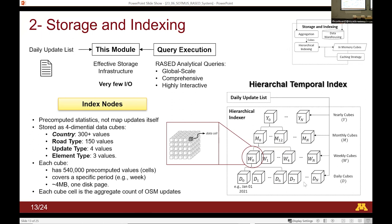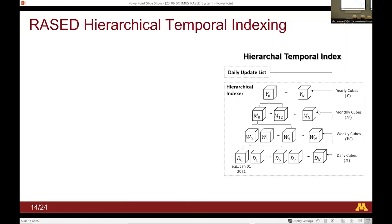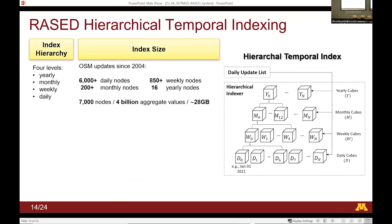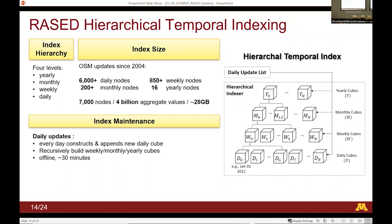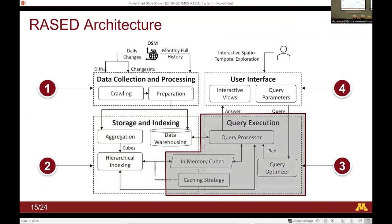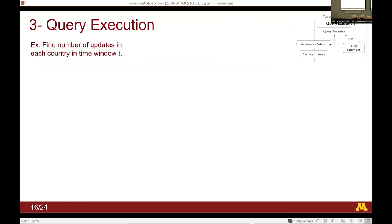We have four levels of these cubes: daily cubes, weekly cubes, monthly cubes, and yearly cubes. In total we have 7,000 nodes, four billion aggregated values, and the whole index is roughly 28 gigabytes. To maintain this index, daily updates are appended — there is no update to previous values, because these correspond to changes already made to OSM, so once a change has happened you don't need to recount it.